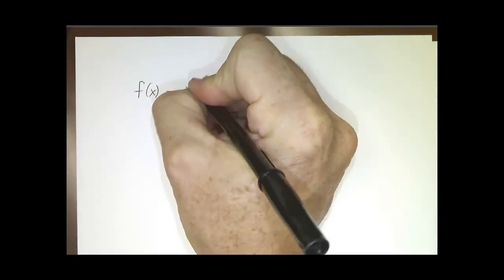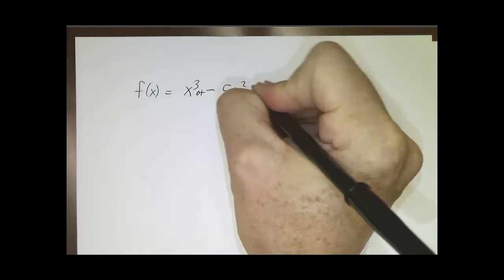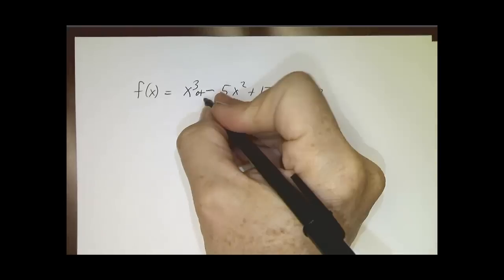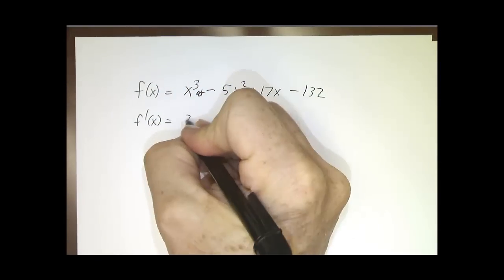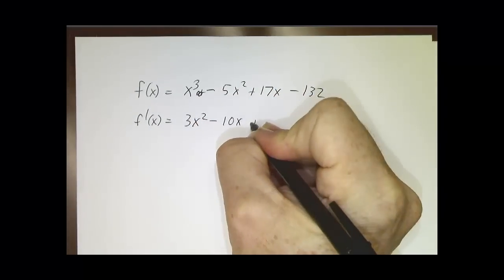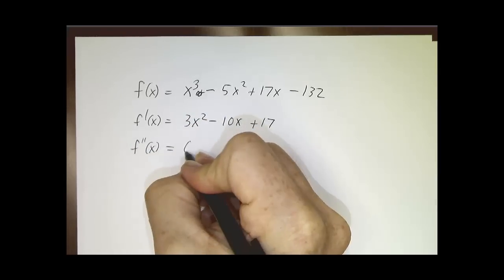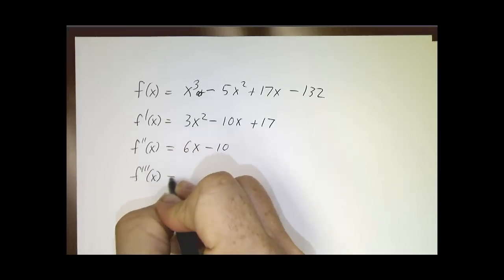So what can you tell me about how many roots a polynomial has? Let's suppose that f is x cubed plus, let's say, minus 5x squared plus 17x minus 132. How many roots can that have? Well, its derivative is 3x squared minus 10x plus 17. Its second derivative is 6x minus 10. Its third derivative is 6.